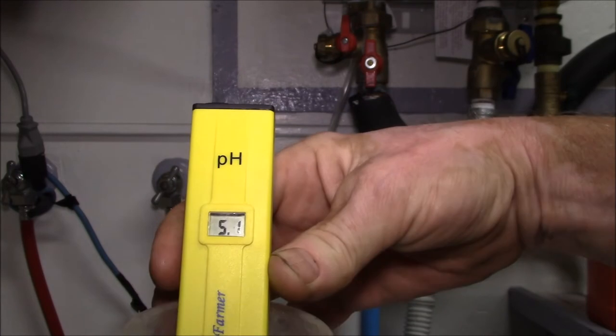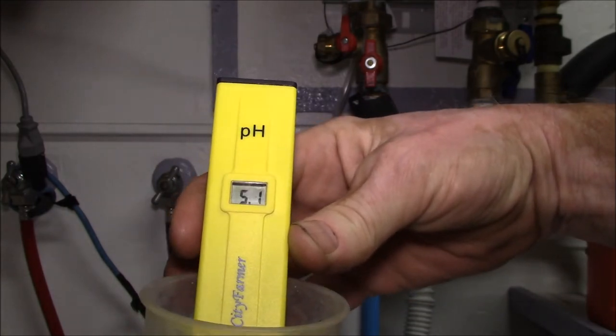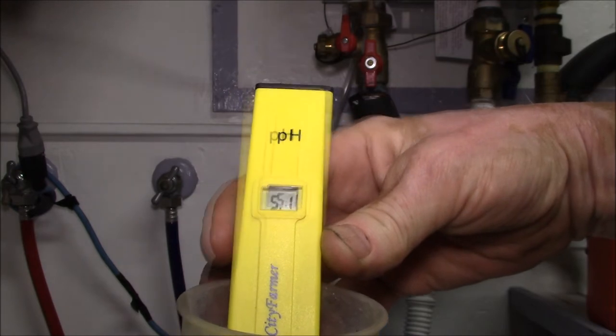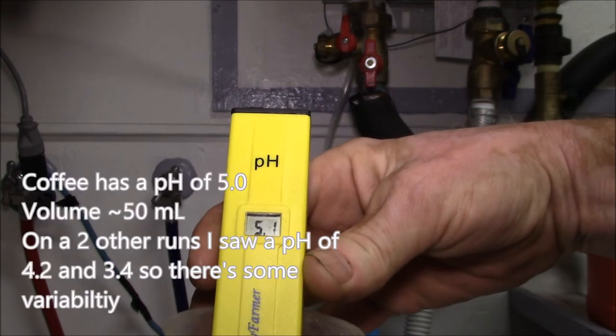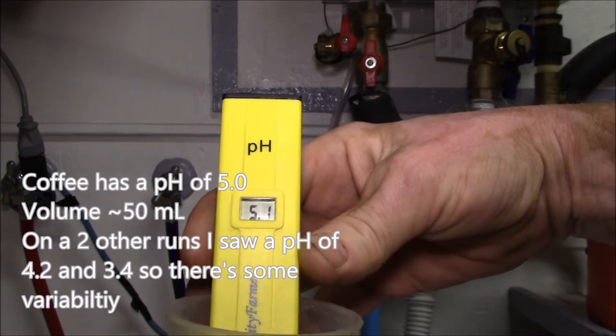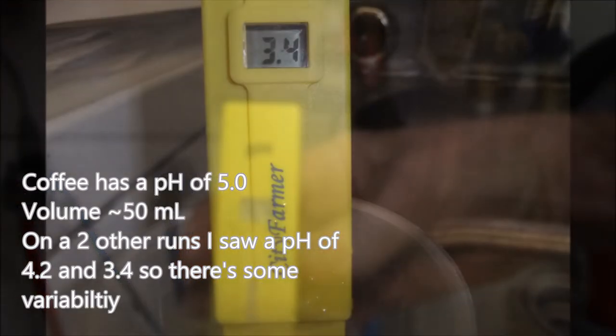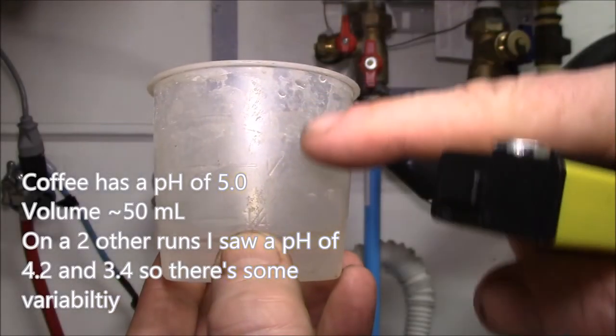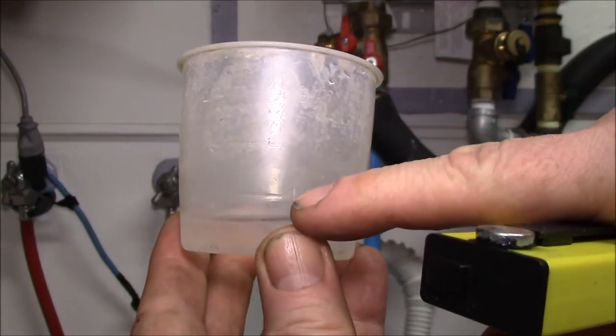So 5, 5.1 pH. But like lemon juice is pH 2, so this is much less acidic than lemon juice. Like I said, this is I think a six ounce cup and that says one quarter, so that would be one and a half ounces.